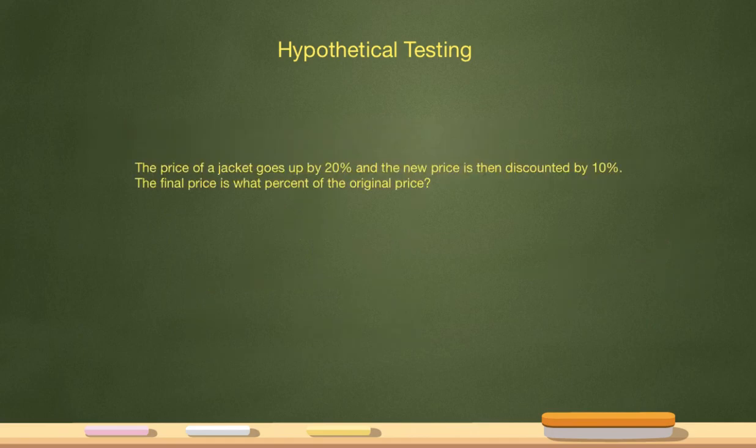Let's do one last example. So this one. Very common. The price of a jacket goes up by 20% and the new price is then discounted by 10%. The final price is what percent of the original price.